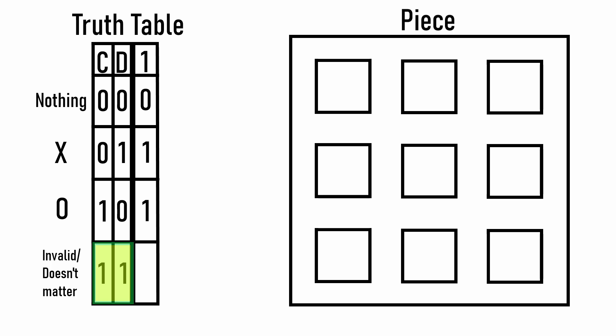Lastly, we have our invalid state. It doesn't matter what the logic gate outputs when the outputs are both on, since they should never both be on anyways. So we could just write a dash to mean not applicable, or it doesn't matter.